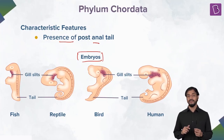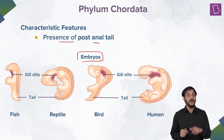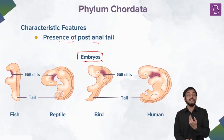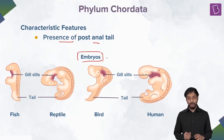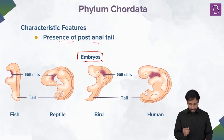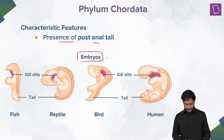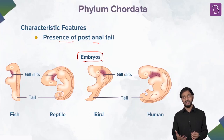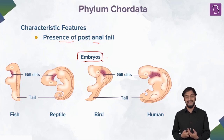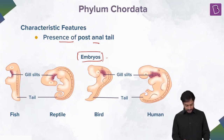We human beings do not have a tail now, but once upon a time we did — during our developmental embryonic stages. The post-anal tail was present at the embryonic stage in all fishes, reptiles, birds, and human beings. That is a characteristic feature of phylum Chordata. In most organisms, the post-anal tail is lost when they grow into adults.